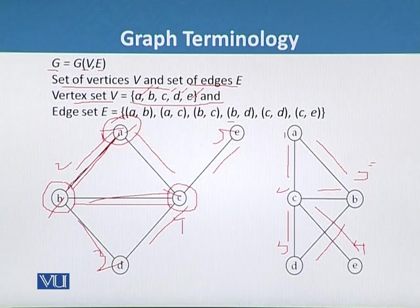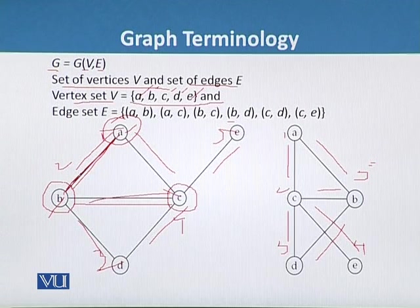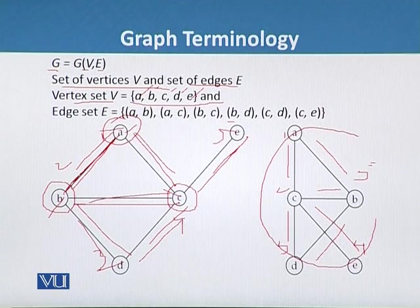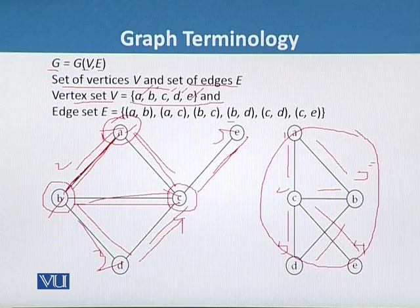We can see here that there are six sets of edges. First is (a, b) because they are connected with each other. Next is (a, c), third is (b, c), fourth is (b, d), fifth is (c, d), and last is (c, e).